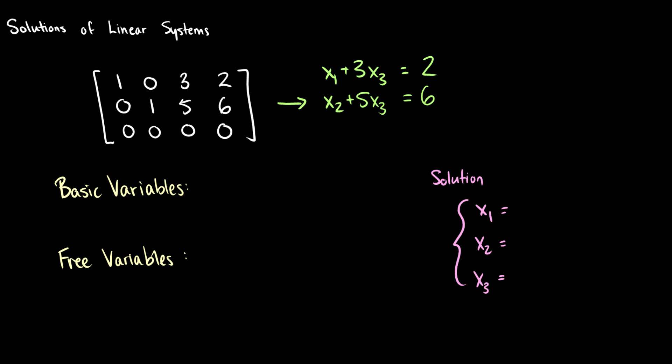In this video, we're going to talk about solutions of linear systems and talk about basic and free variables. So I have an example here, and it is a system with three variables where the last row is all zeros.